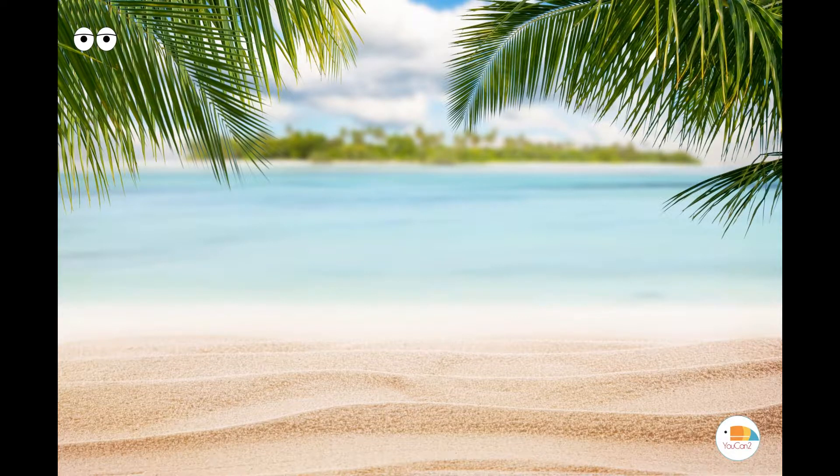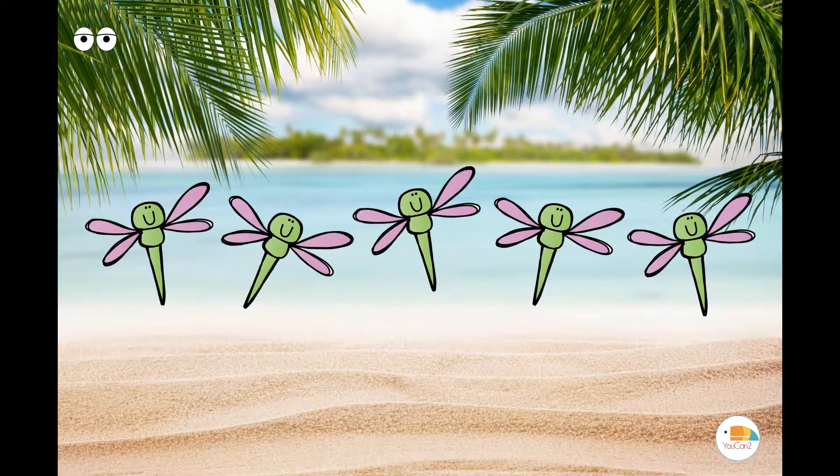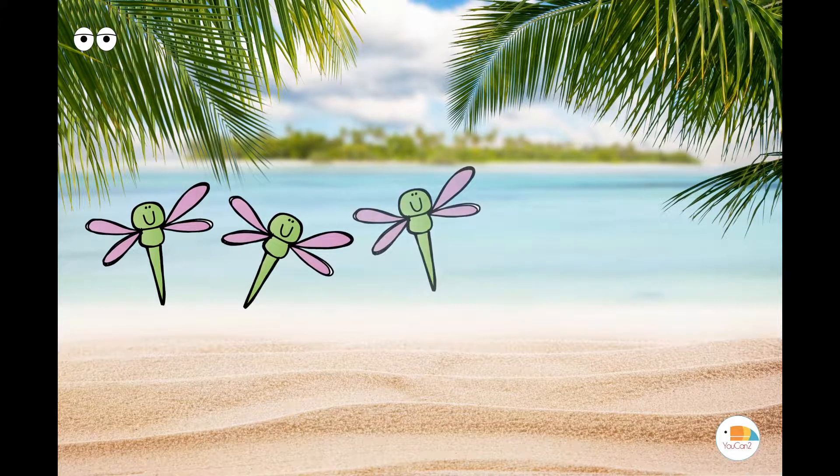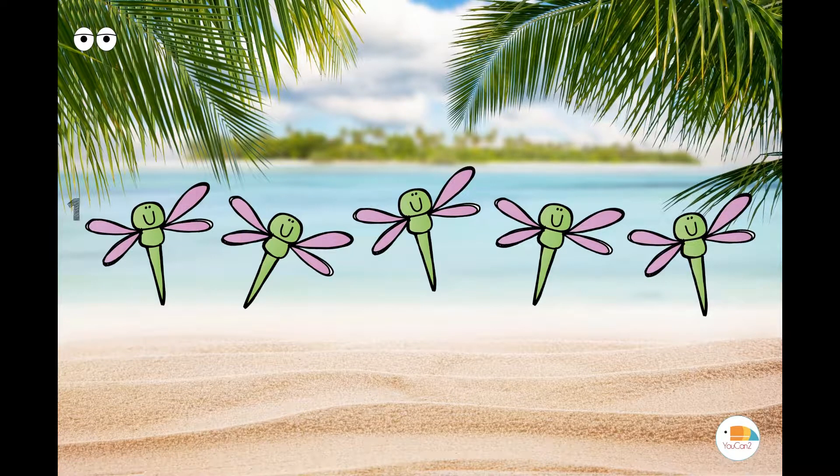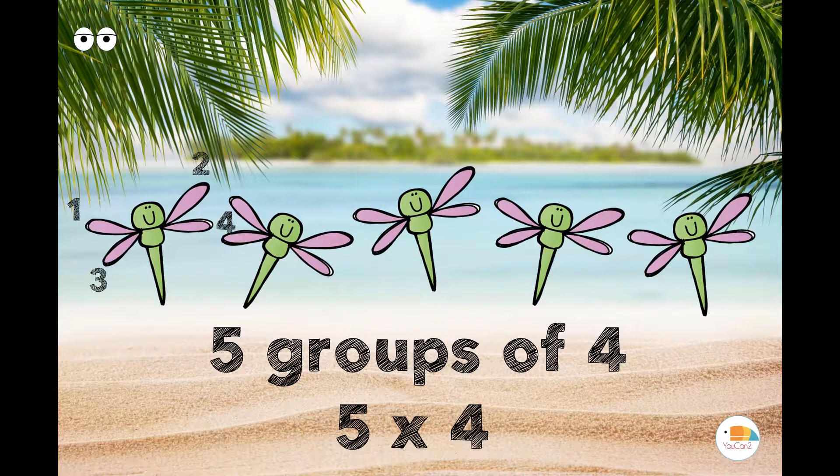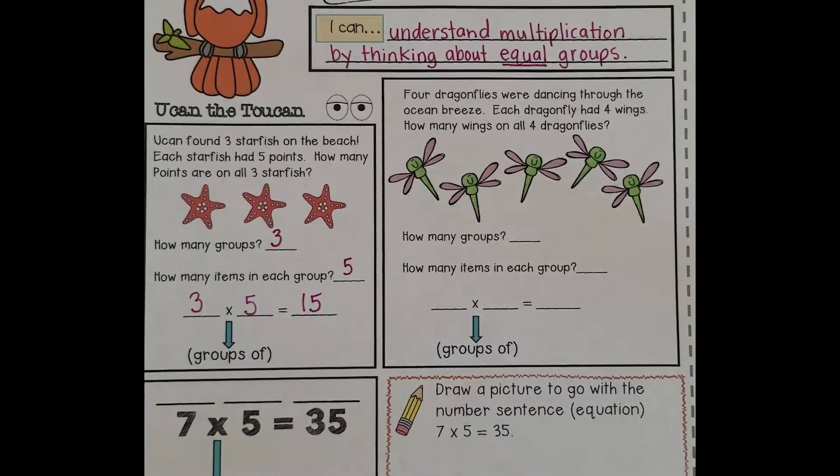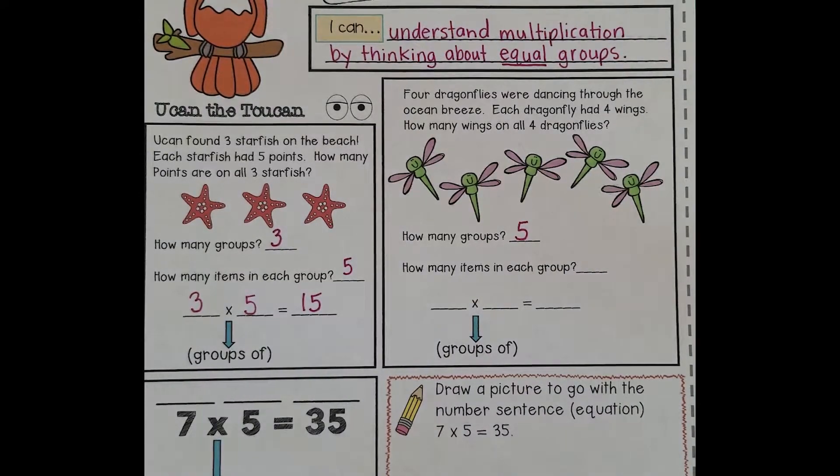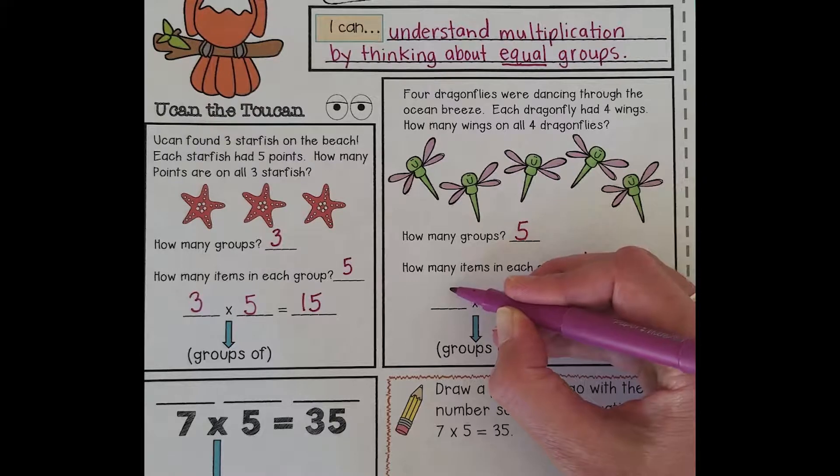The beach again! Toucan, you think you can find some more equal groups? Oh look, you did! Some dragonflies. There are one, two, three, four, five dragonflies, and each dragonfly has one, two, three, four wings. That's five groups of four, or five times four. So how many groups were there? That's right, there were five groups. And how many items in each group? Four, because each dragonfly had four wings.